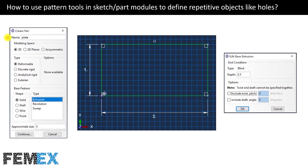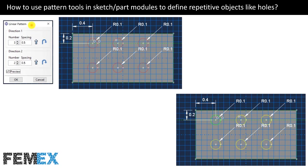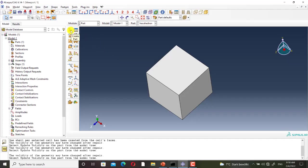Now I want to talk about how to use pattern tools in sketch and part modules to define repetitive objects like holes. I create a part named Plate that is 3D deformable solid. I use the extrusion technique to create it. This is its sketch and the extrusion depth is 0.1. After creating the part, I create a hole on it and this is its sketch. Then I use the Linear Pattern tool to create five other holes from the sketch of this hole, and finally we have six holes. I go to Abacus to do this procedure and I click on Create Part.